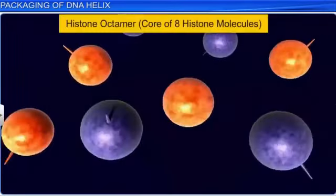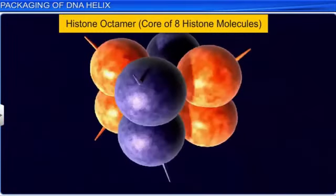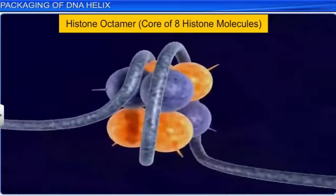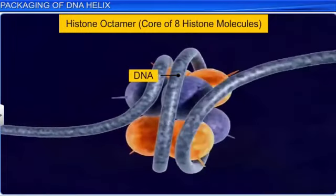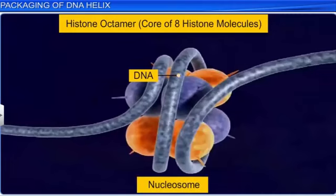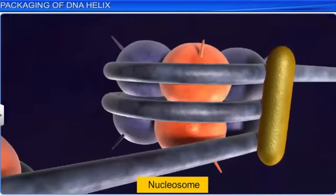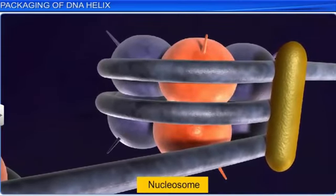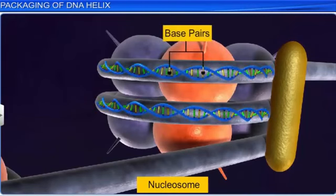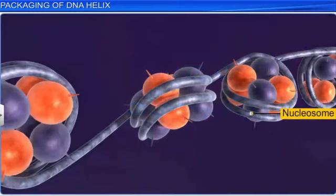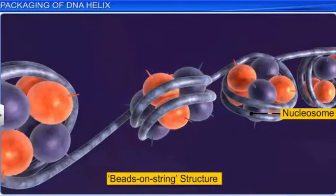Furthermore, the histones are arranged to form a unit of 8 molecules known as the histone octamer. Around the positively charged octamer, a negatively charged DNA molecule is wrapped to form a structure known as the nucleosome, which is held in place by the H1 histone. A typical nucleosome has around 200 base pairs of DNA helix, and the nucleosomes present in chromatin can be seen as a beads-on-string structure when observed under an electron microscope.